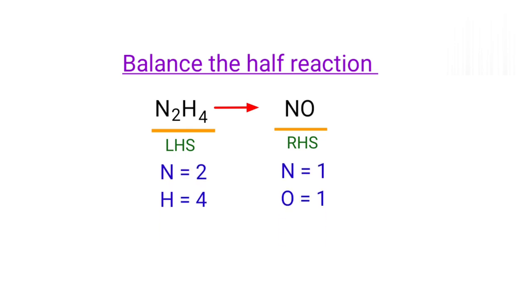Balance the half reaction. In this half reaction, the left hand side there are two nitrogen atoms and four hydrogen atoms present, and the right hand side there are one nitrogen atom and one oxygen atom present.